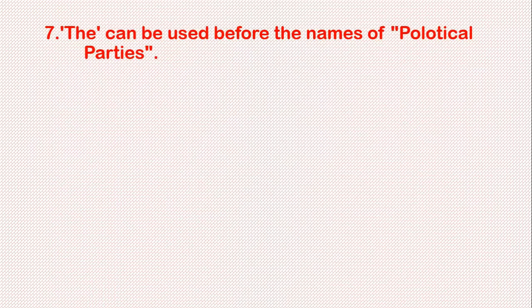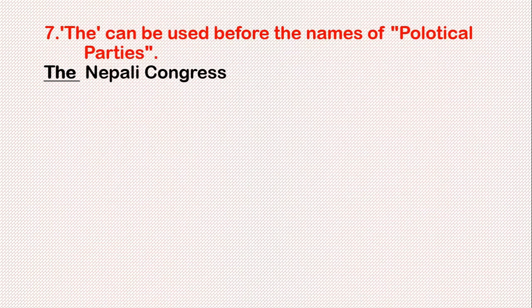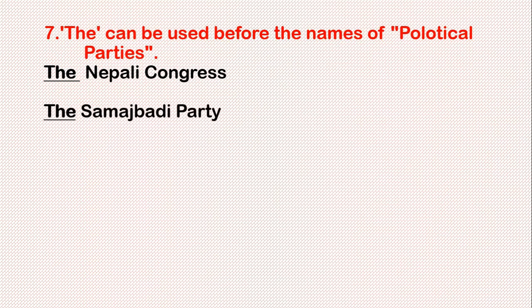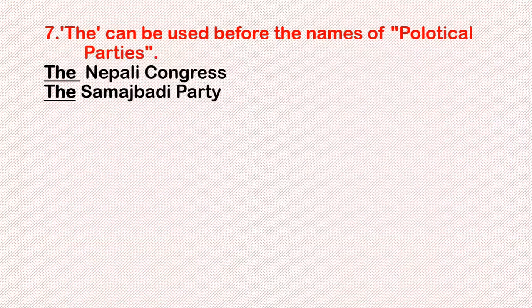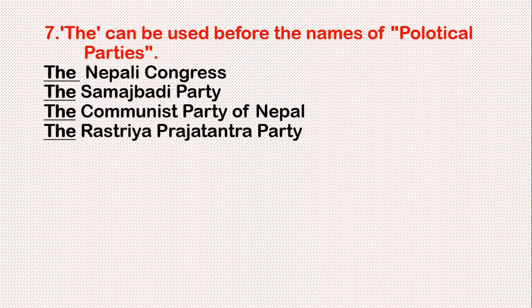Rule 7: 'The' can be used before the names of political parties. For example: the Nepali Congress, the Samajwadi Party, the Communist Party of Nepal, the Rashtriya Prajatantra Party, etc.